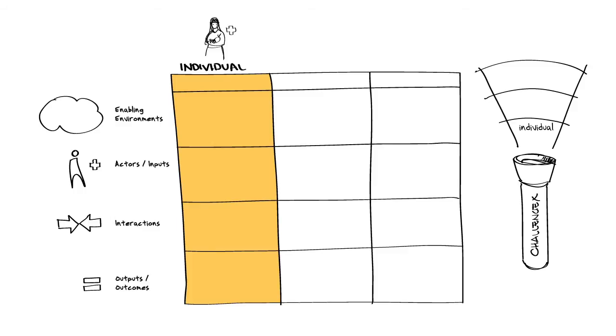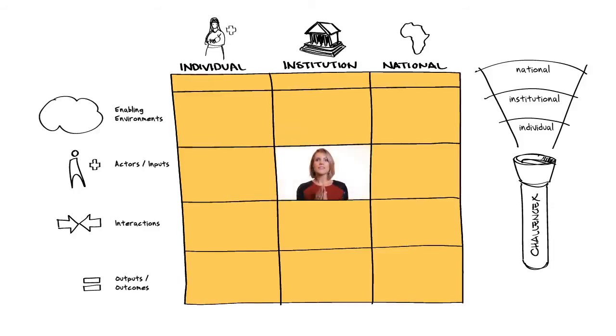More broadly, think about institutions. Within whole institutions, what do you need to know to understand not only the likelihood of an innovation being a success, but the context in which scaling that innovation is likely to occur? And at the most broad level, at the level of a whole nation, a whole country, what does it mean for you, the innovator, and for the beneficiaries whose lives you seek to improve?